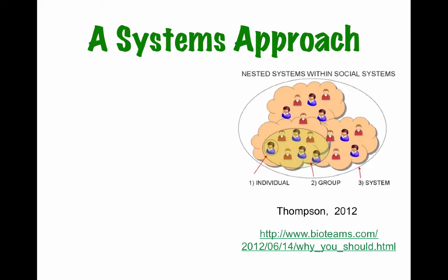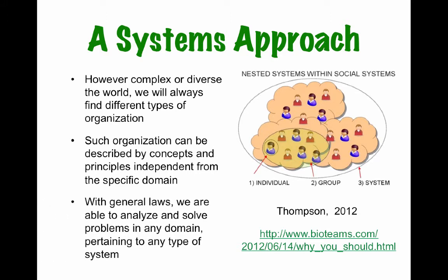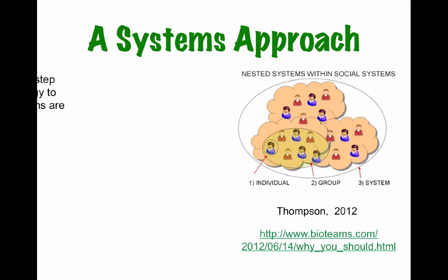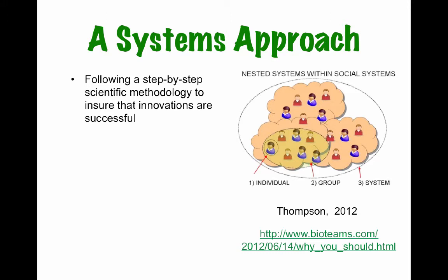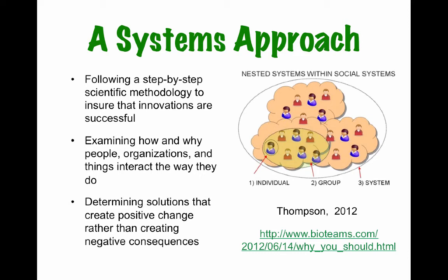A systems approach: however complex or diverse the world, we will always find different types of organizations, and such organizations can be described by concepts and principles independent from the specific domain or type of organization. With general laws, we're able to analyze and solve problems in any domain pertaining to any type of system. This provides a step-by-step scientific methodology to ensure innovations are successful, examining how and why people, organizations, and things interact, and determining solutions that create positive change rather than negative consequences.